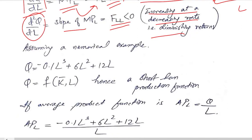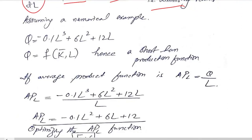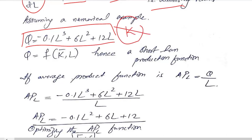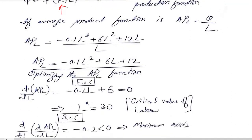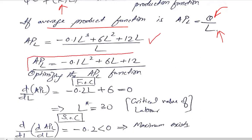Now let's take an example. Here we can see a production function with no capital in it, meaning this is a short-run production function. We keep K as a silent variable and calculate the average production function simply by dividing the production function by labor, which leads us to the average product of labor.